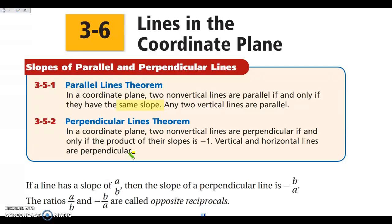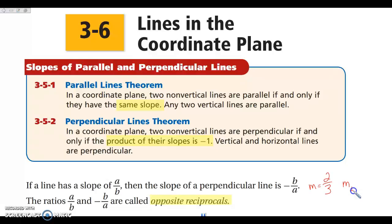Perpendicular lines are going to be perpendicular if the product of their slopes is negative 1, meaning that they are opposite reciprocals. So if I have a slope that's A over B, the perpendicular slope is negative B over A. For example, if I have a slope of 2/3 for my original line, then my perpendicular slope — I flip the fraction to 3/2, and I change the sign to negative 3/2. So 2/3 and negative 3/2 are what we call opposite reciprocals or negative reciprocals, and those are your slopes of perpendicular lines.